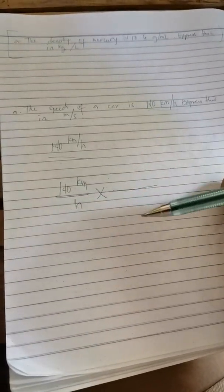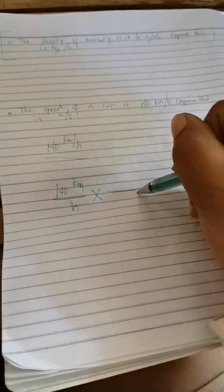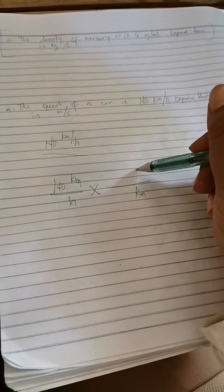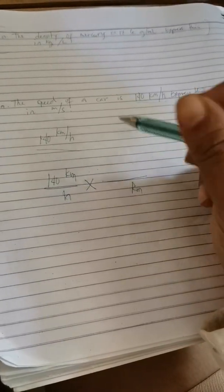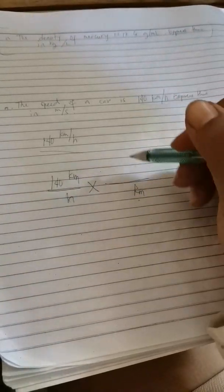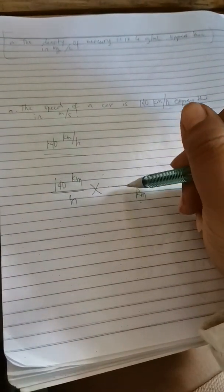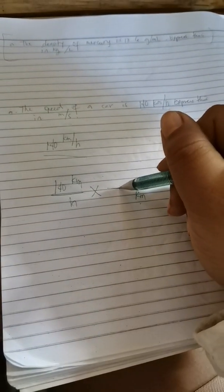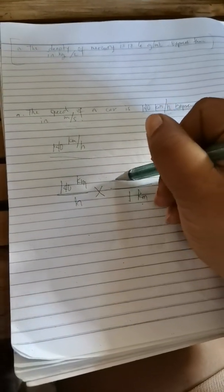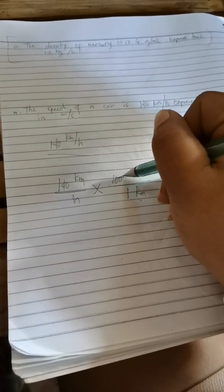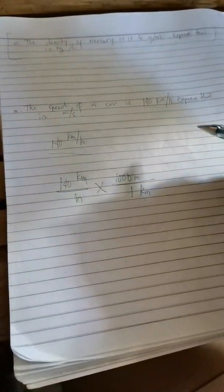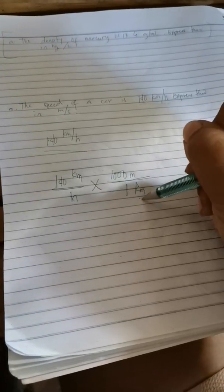So times, since our kilometer is in the numerator - as you can see it's in the numerator - to eliminate that we have to put kilometer here in the denominator. Because if you put that in the numerator, your kilometer will become kilometer squared. So kilometer should be in the denominator to be eliminated. In one kilometer, there are how many meters? One thousand. In one kilometer there are one thousand meters.